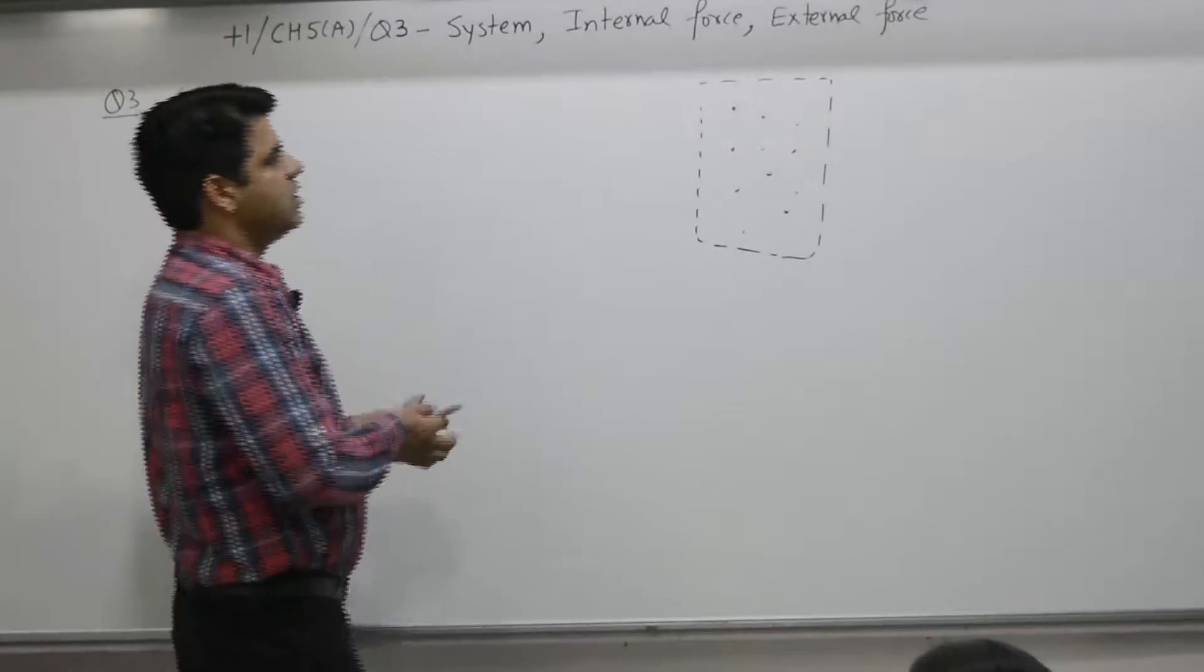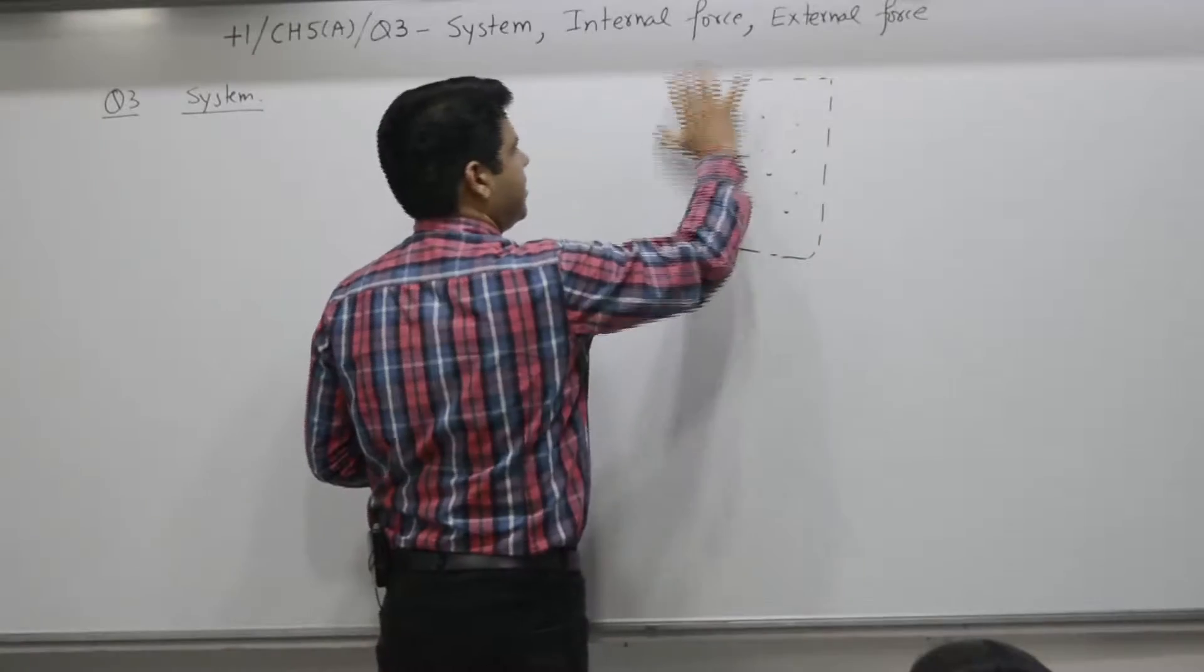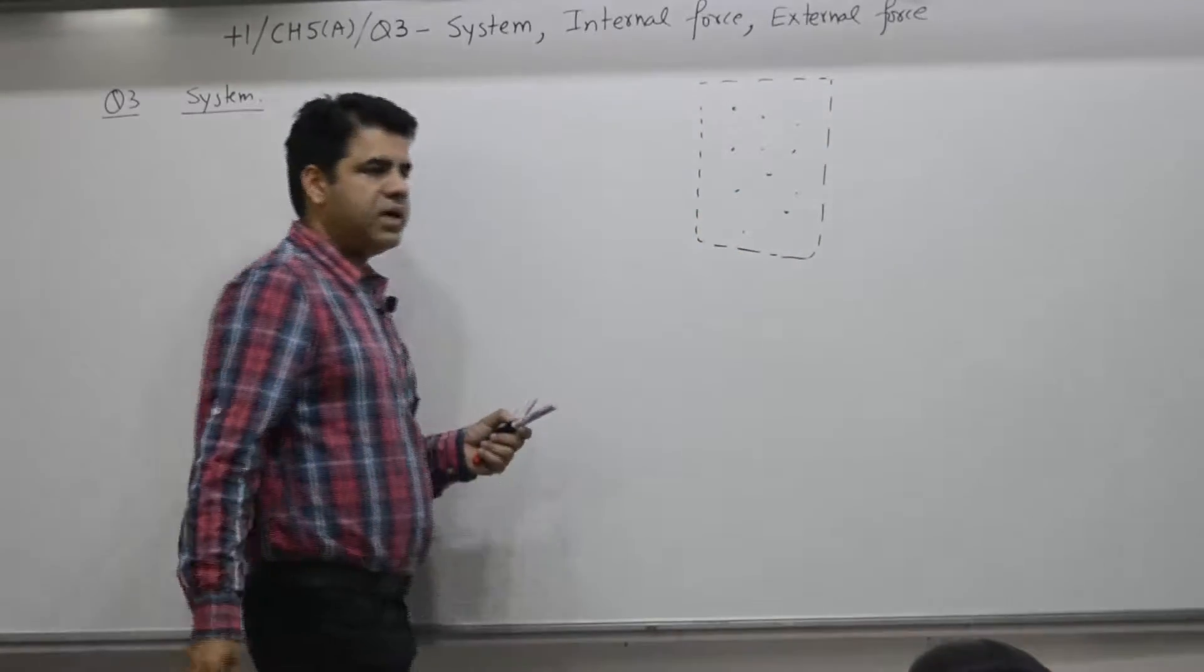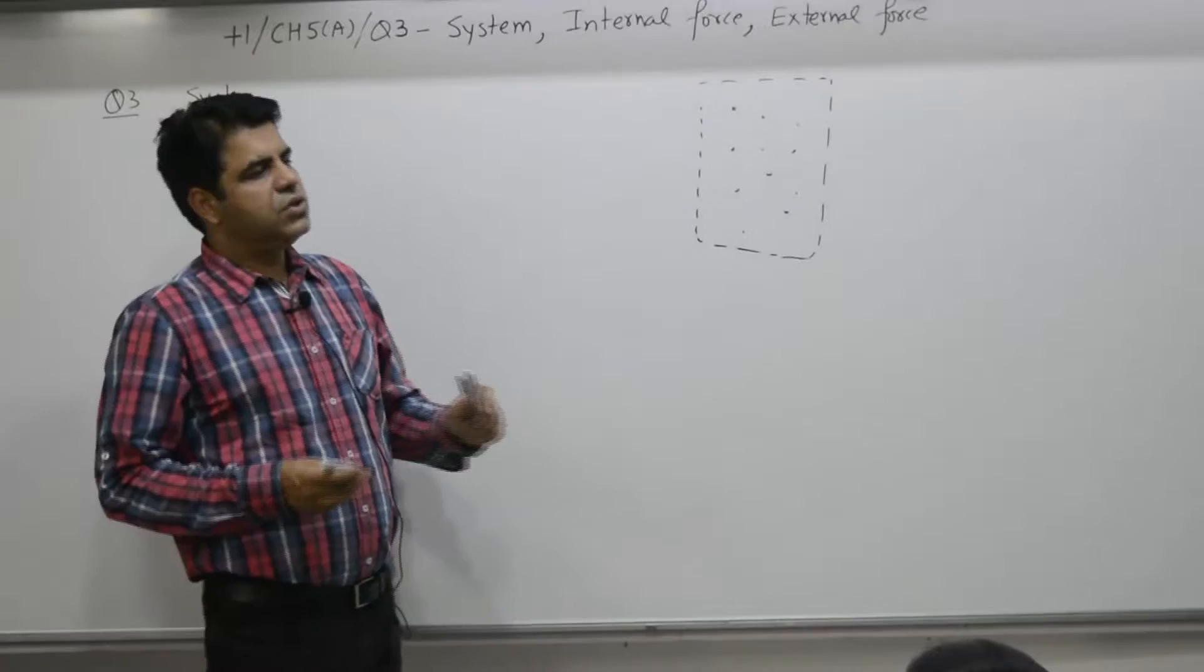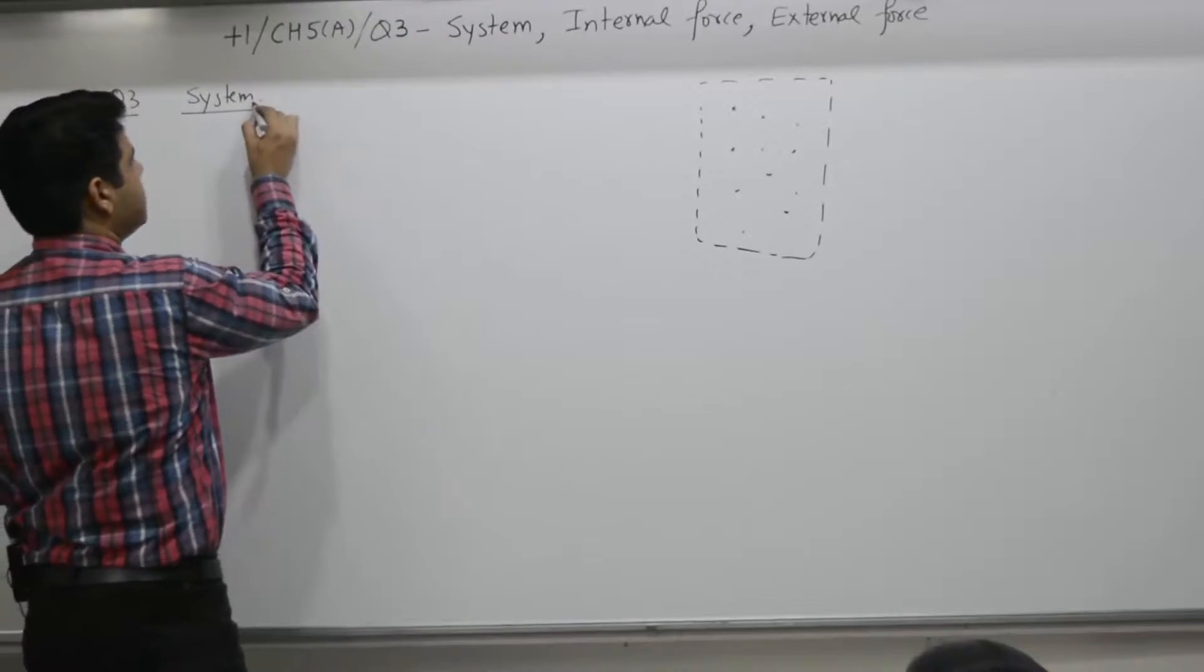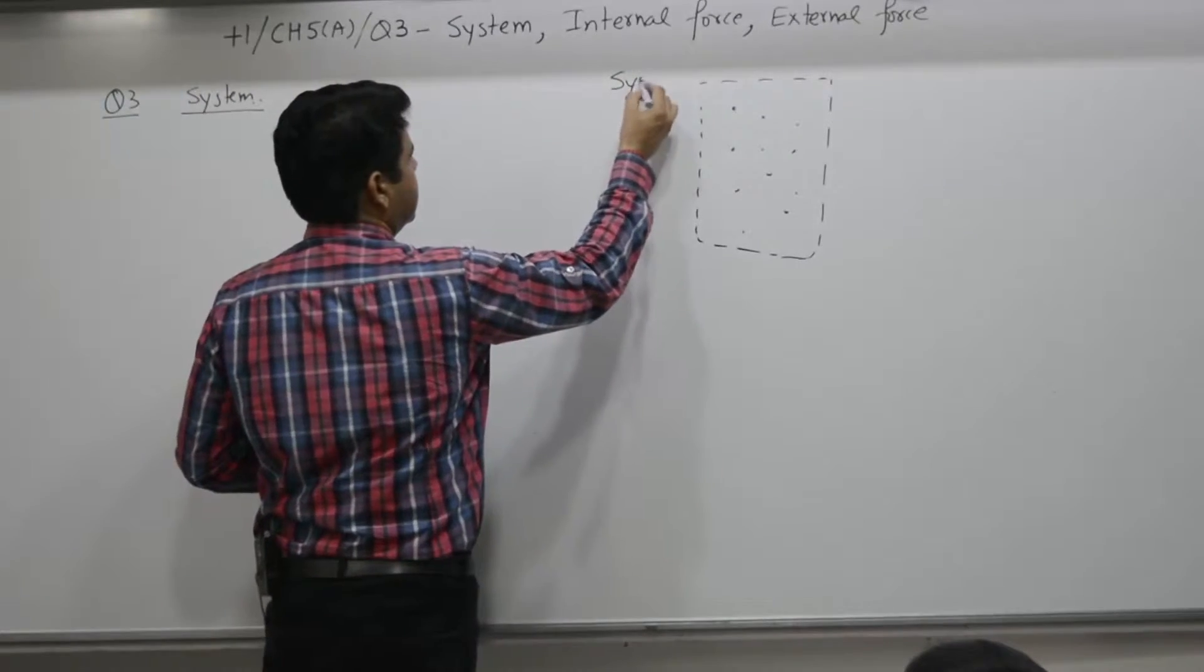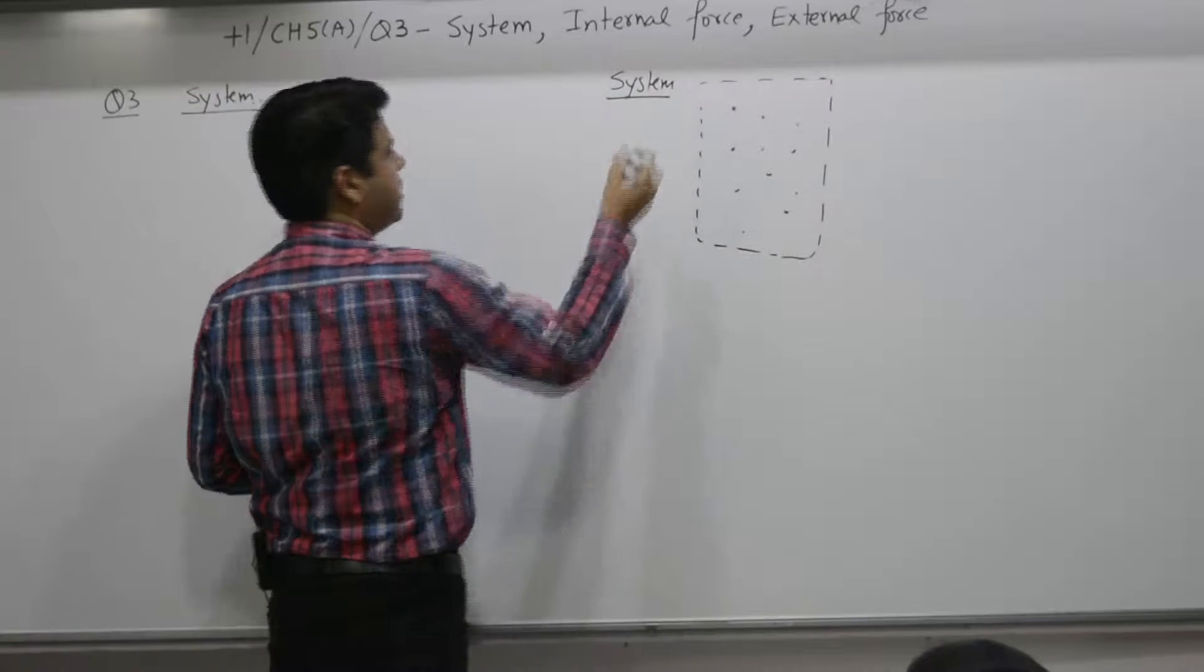So what is a system? It is a certain area having a certain number of particles where the observer wants to have observation. So who decides? The observer. The observer will decide the size and boundaries of the system.